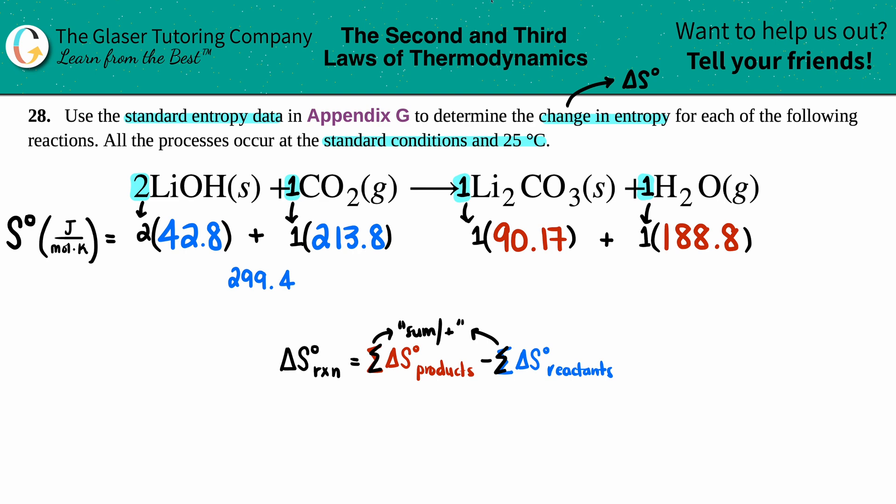For the product side, I get 90.17 plus 188.8, I get 278.97. Those are your totals on both sides.